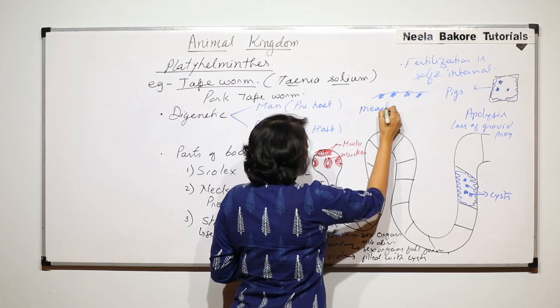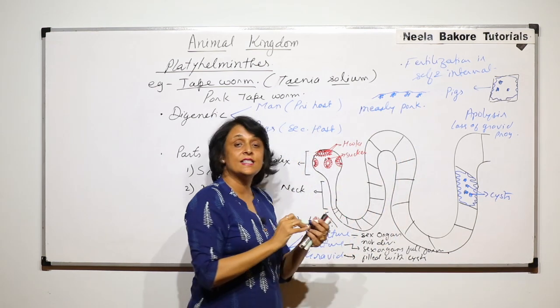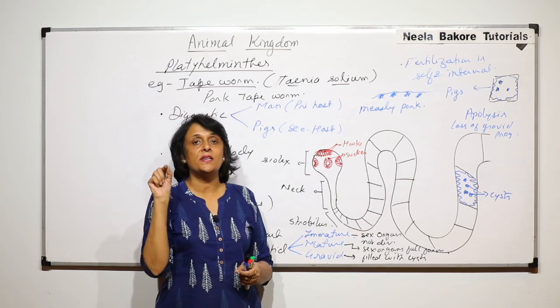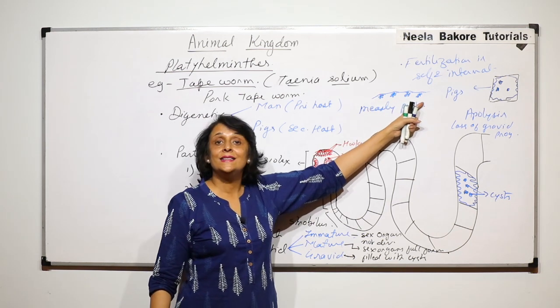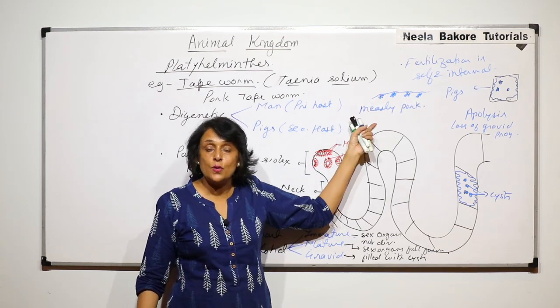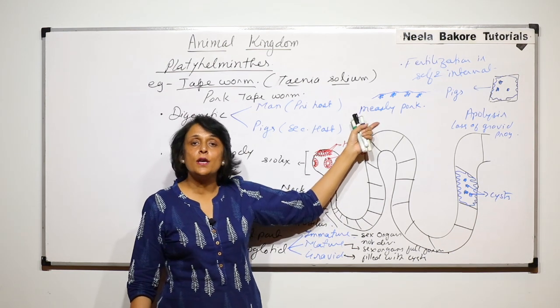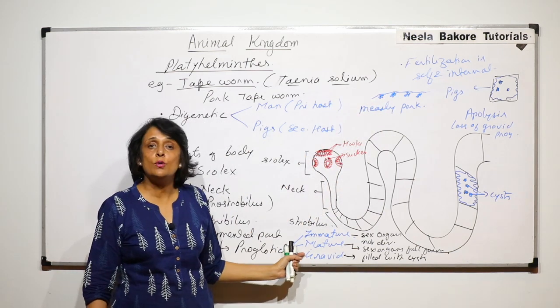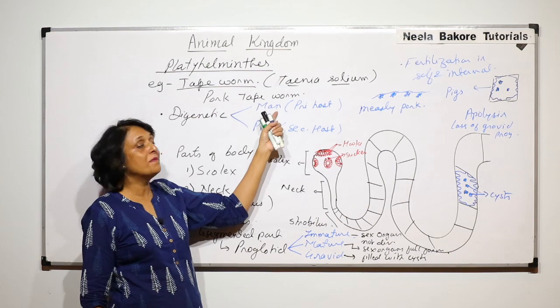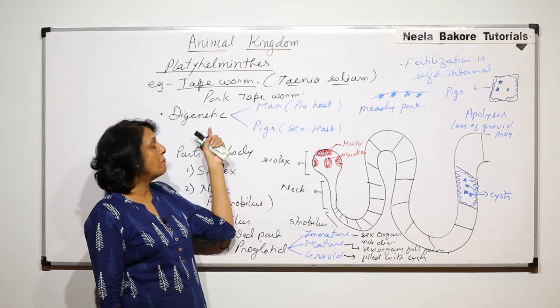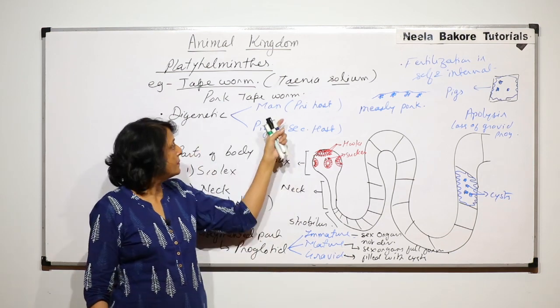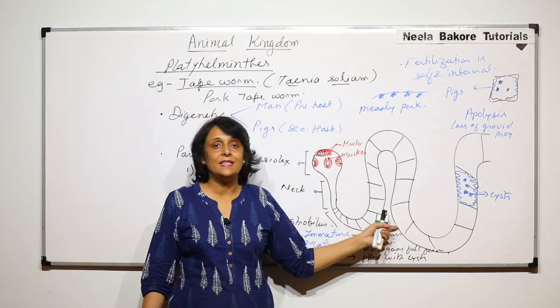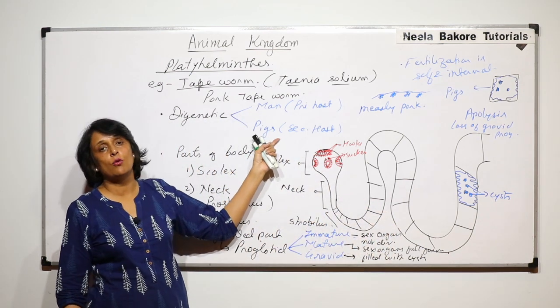So if we see it from outside it would appear like this, and because of this reason we call this measly pork. In case of measles rashes appear on our skin and because of these rashes there are those bumpy structures which are visible, and this is exactly the same thing which is seen in case of pork also. Now if this improperly cooked pork is consumed by humans, those cysts would enter into our body. And that is why we say that there are two hosts, that means tapeworms are digenetic. Primary host is man where sexual reproduction of the endoparasite is completely taking place and secondary host is the pig.